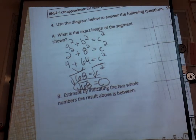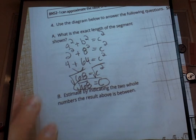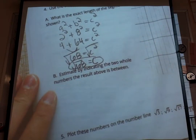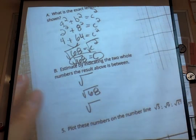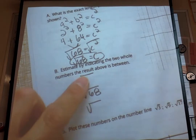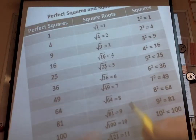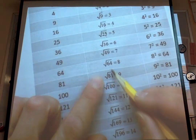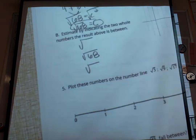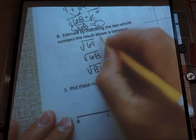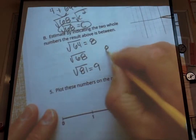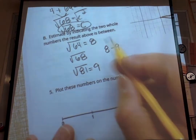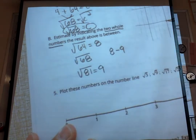If they were asking us for an estimate, that's where we'd find whole numbers to approximate. In letter B, estimate by indicating the two whole numbers that the result falls between. I'm going to make three square root brackets with 68 in the middle. We need to find one perfect square smaller and one larger. On our sheet, 68 falls between 64 and 81. The square root of 64 is 8 and the square root of 81 is 9. So our answer falls between 8 and 9 — we're just asked which two whole numbers it falls between.